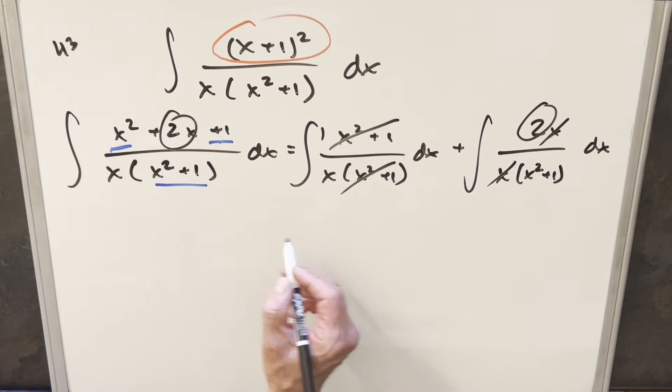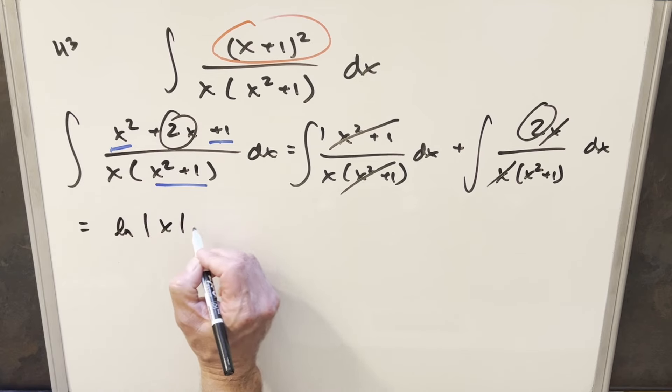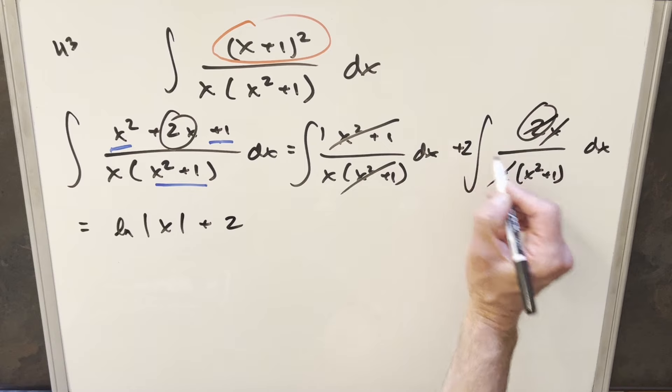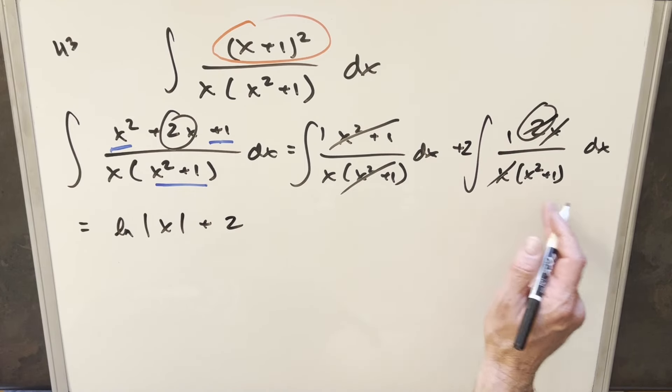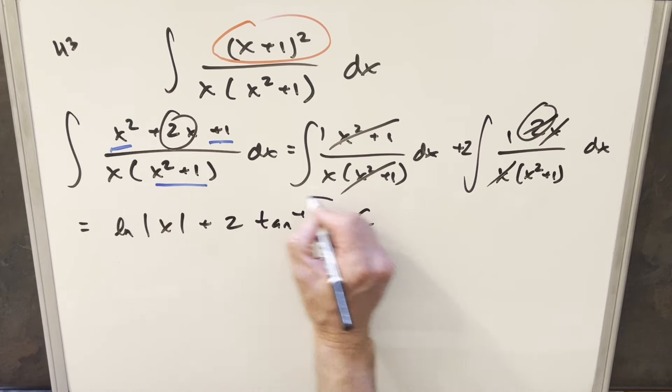Because integrating this is just like 1/x here. So for this first one, we get natural log absolute value of x. For this second one, I can bring a 2 out front, and then if we bring the 2 out front, we just have 1/(x²+1). This integral is just going to be arctan of x, add a plus C, and that's it.